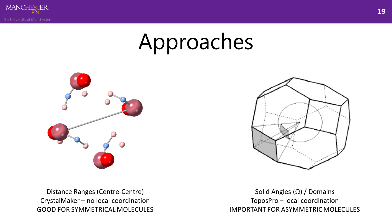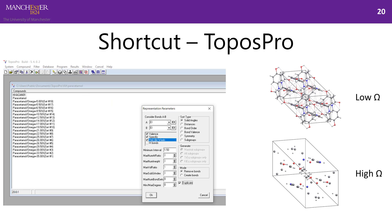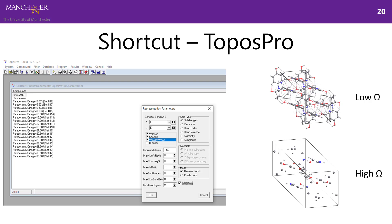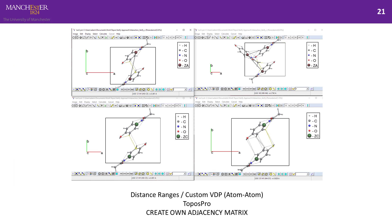In ToposPro this is represented by two modes: the solid angles approach or the domains approach, which relate to the size of the VDP face relative to other faces — larger faces generally indicate larger interactions. You can also use distance ranges, supported in both Crystal Maker and ToposPro. ToposPro also has shortcuts for generating structures considering different interaction strengths by cutting off different-sized Voronoi faces. You can also create your own adjacency matrix in ToposPro to define connections manually between atom types.